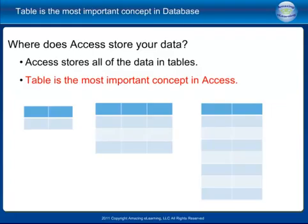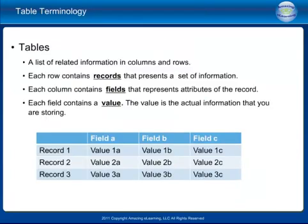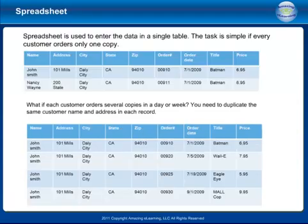Where does Access store your data? Access stores all of the data in tables. A table is the most important concept in Access. Tables are a list of related information in columns and rows. Each row contains records that present a set of information. Each column contains fields that represent attributes of the record. Each field contains a value — the actual information that you are storing.